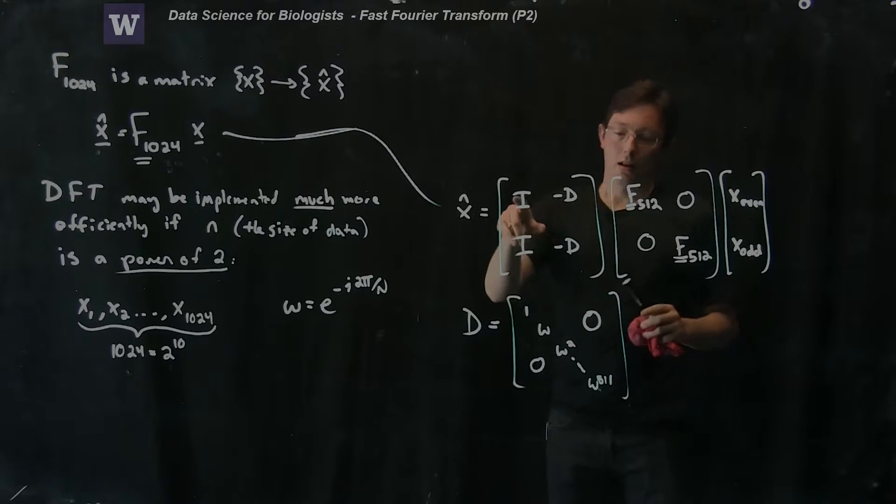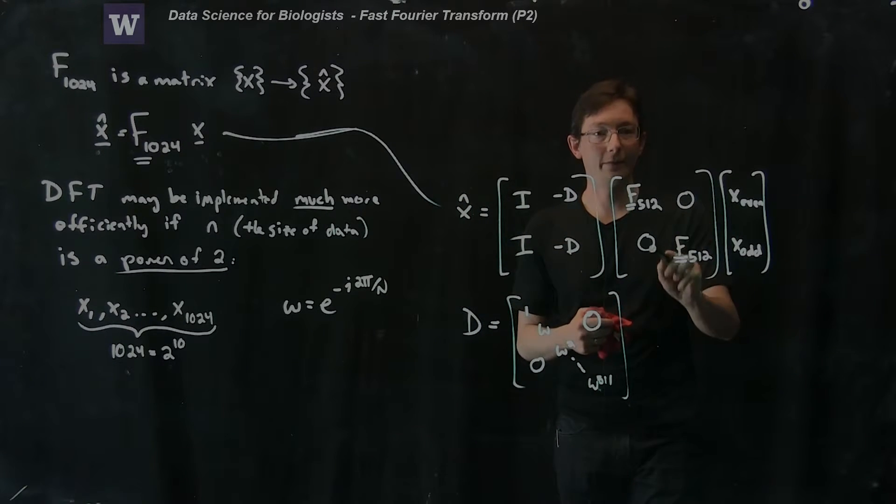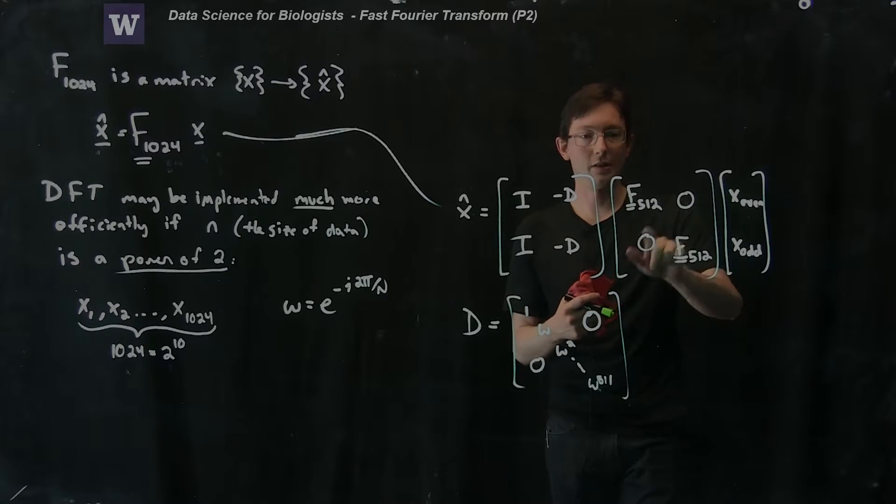But notice that I'm doing a lot less multiplications here, right? This is half the multiplications because these are all zeros. That's great.